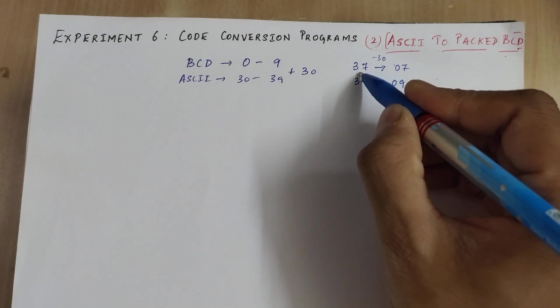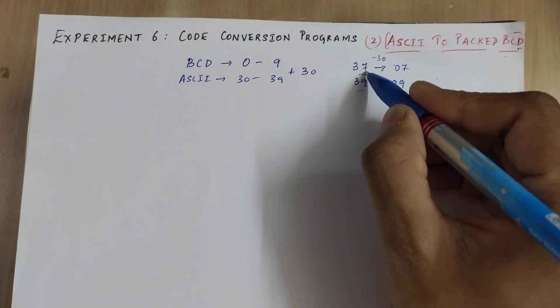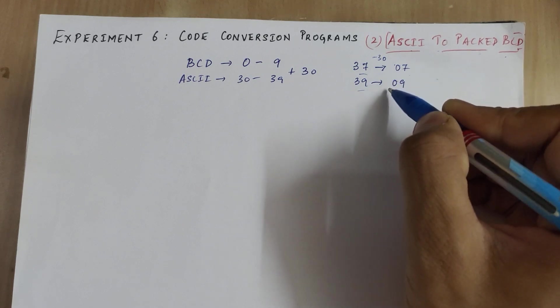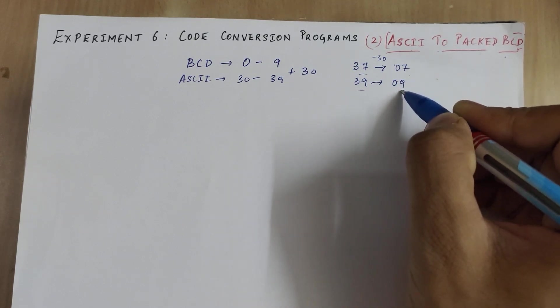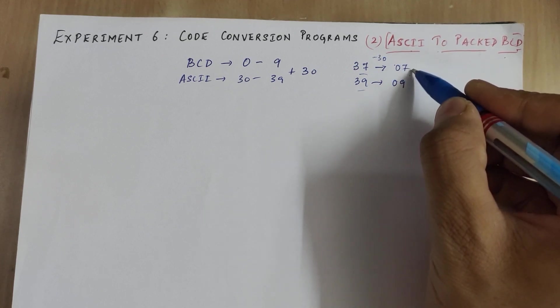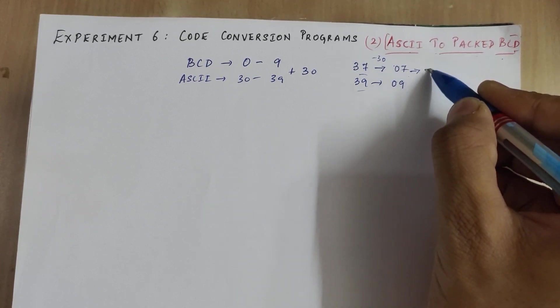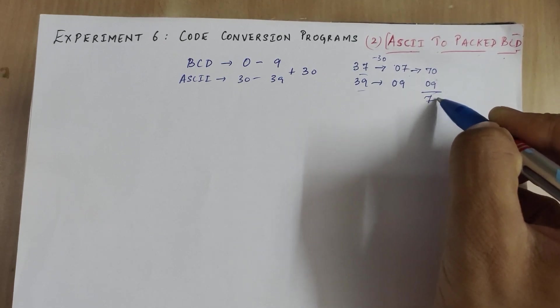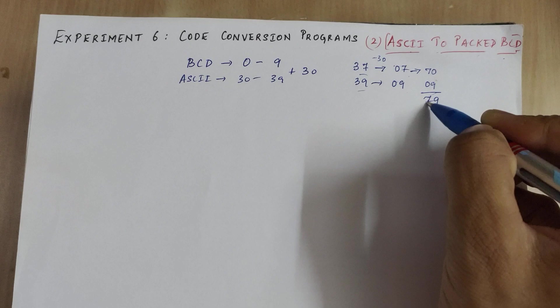We will be giving two ASCII numbers: 37 and 39. 37 represents the ASCII of 7 and 39 represents the ASCII of 9. This is in total a two-digit BCD number. The first digit is 70 and this is 9, so 79 is the actual packed BCD.